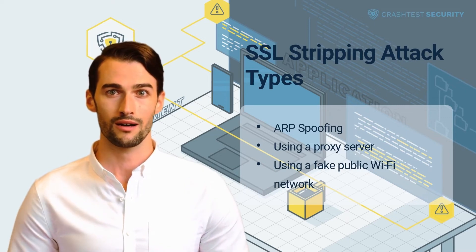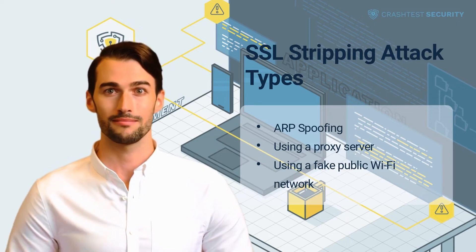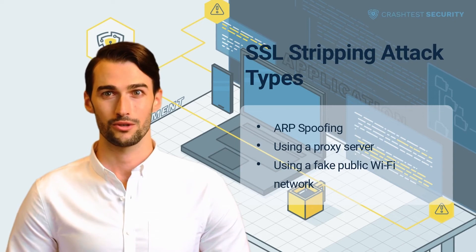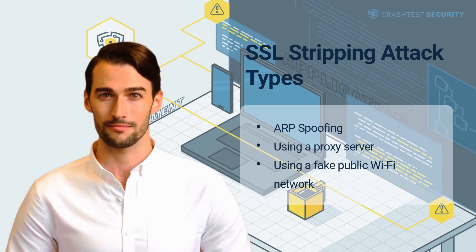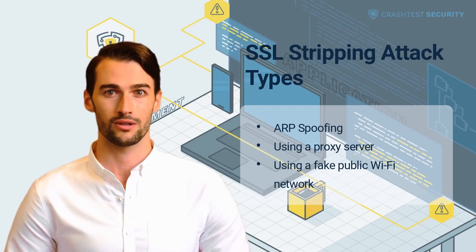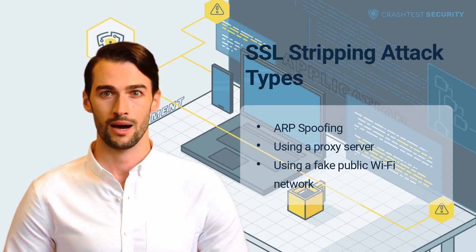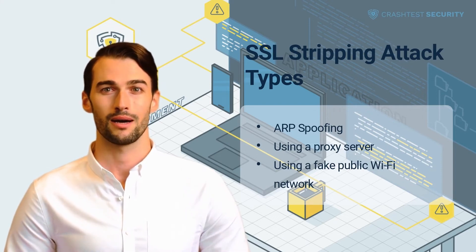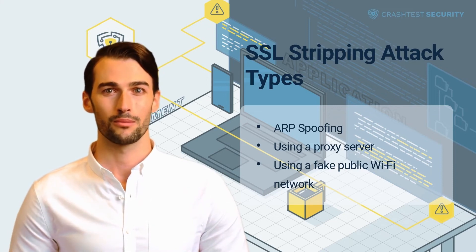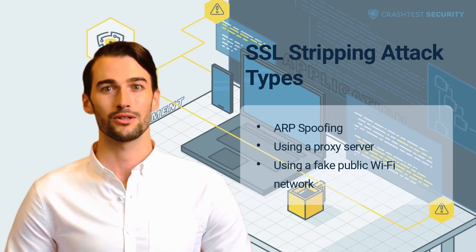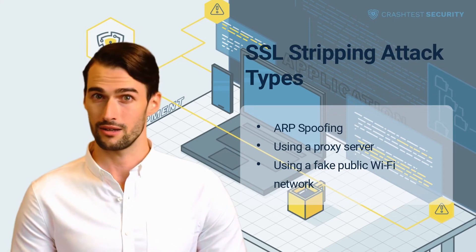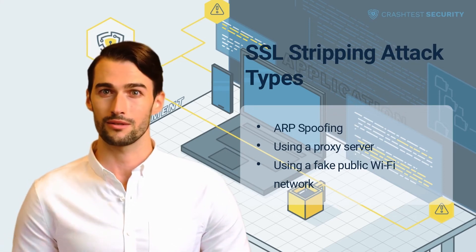Using a fake public Wi-Fi network: cybercriminals can set up public wireless networks to lure users into connecting to them. Threat actors often use network names that resemble popular open Wi-Fi networks and legitimate hotspot names, such as the names of cafes and public institutions. Once connections are established through the fake hotspots, the attackers can obtain all users' communications that pass through it.